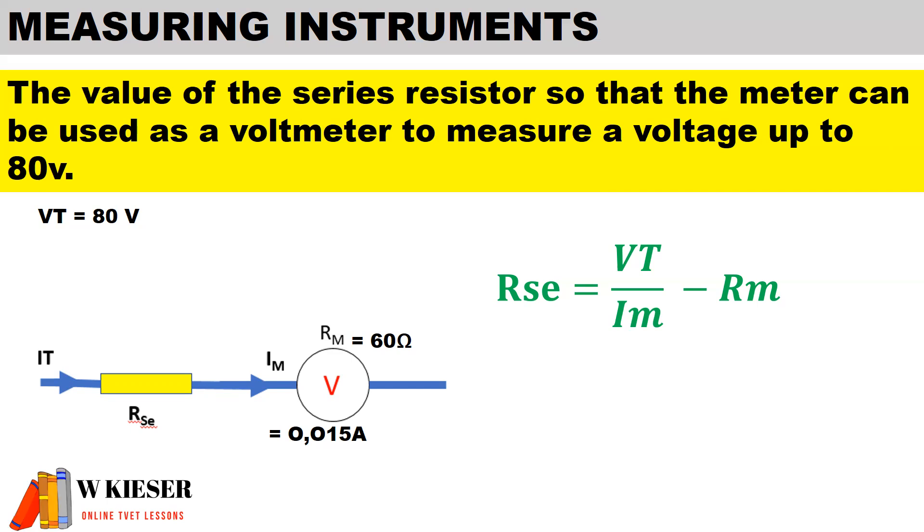The total voltage that this measuring instrument will measure is 80 volts. Voltage is divided in the series circuit, so the sum of the volt drop across the series resistor plus the volt drop across the meter gives you the total voltage. To simplify, we'll use the formula from the formula sheet: the value of the series resistor equals the total voltage divided by the current flow through the meter minus the resistance of the meter.